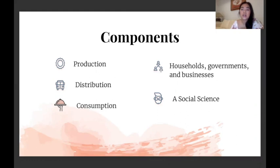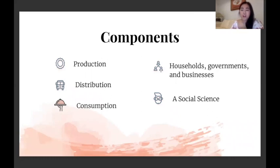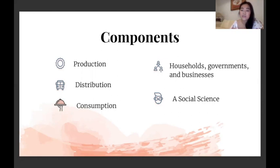People who are involved are obviously households or individuals, the government who controls a lot of these things and takes taxes and redistributes them into government spending in the form of infrastructure or welfare, and of course businesses that provide the goods and services that people need. It's also important to note that both economics and finance are social sciences primarily involved in the behavior of people and how people react to certain stimuli, like taxation or spending and saving patterns.